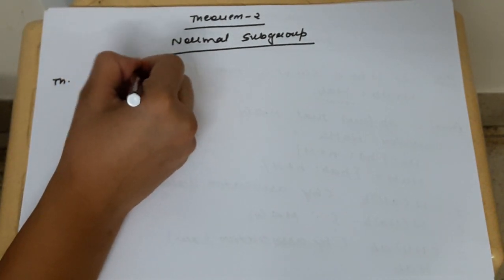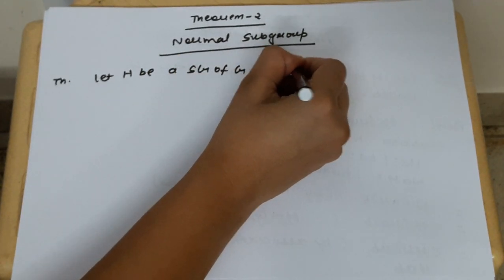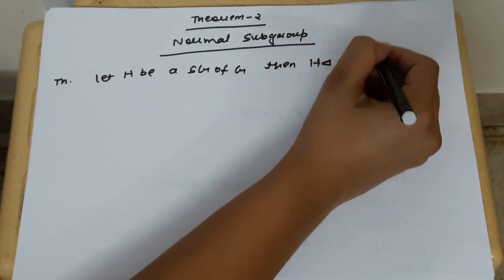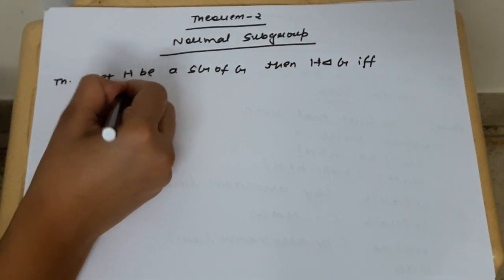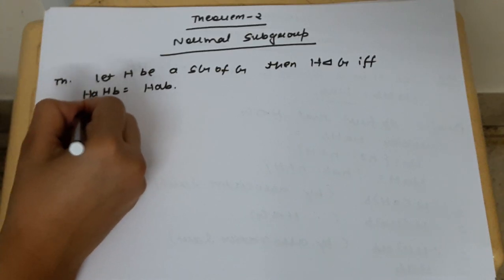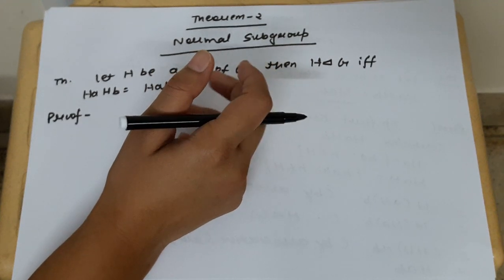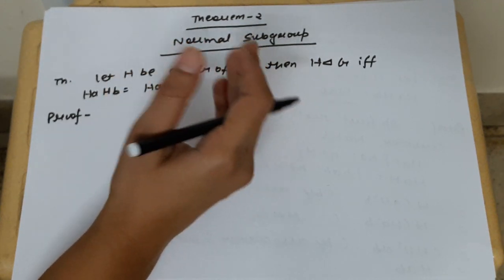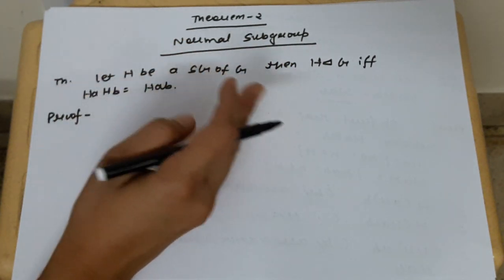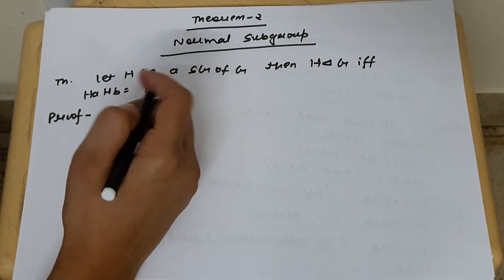Let H be a subgroup of G. Then H is normal in G if and only if HA·HB = HAB. This is a very important theorem and I will directly use it while doing questions on subgroups. Watch it carefully — if you have any doubt, ask me in the comment section. Since this is an if-and-only-if condition, I will prove it in two parts: the necessary part and the sufficient part.